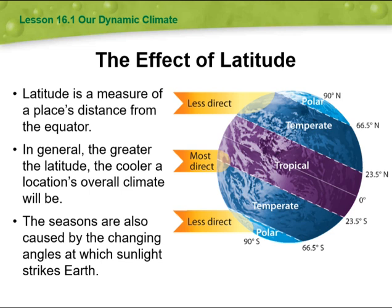Then we have the effect of latitude. We have less direct, most direct, and less direct sunlight as well. Latitude is a measure of a place's distance from the equator. In general, the greater the latitude, the cooler the location's overall climate will be.